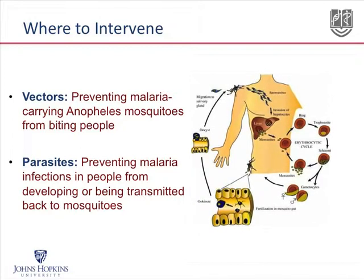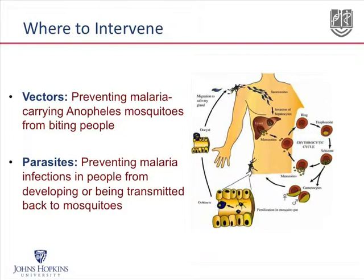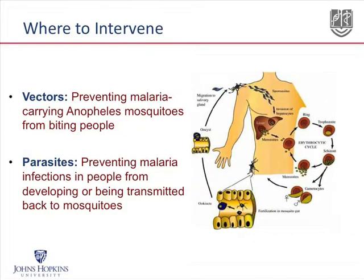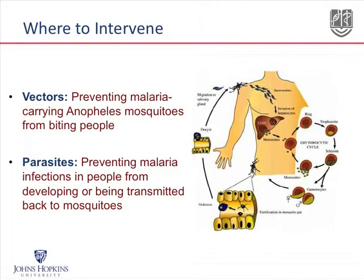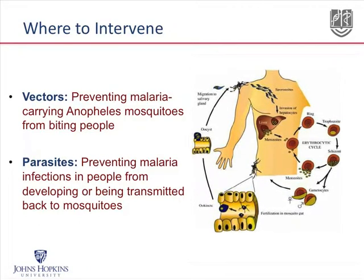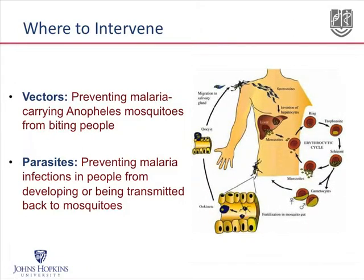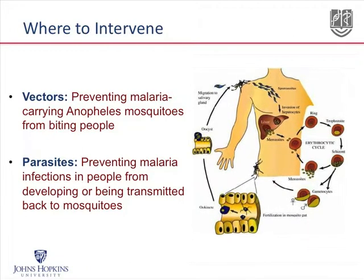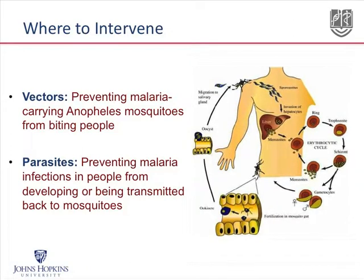These are female Anopheles mosquitoes. They bite people in order to get blood to help develop their eggs. What we want to do is prevent the parasites from going from person to person, either by preventing mosquitoes from biting or by treating people so that the parasites will no longer be available to transmit.